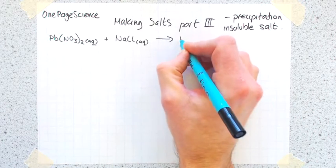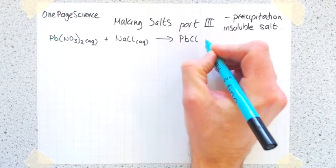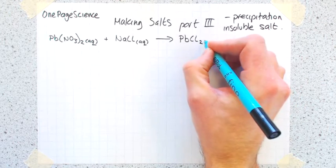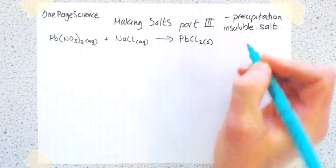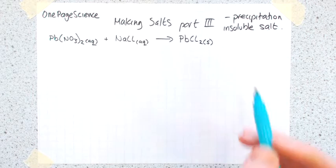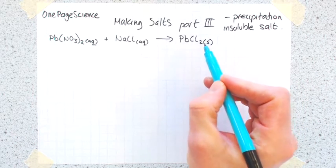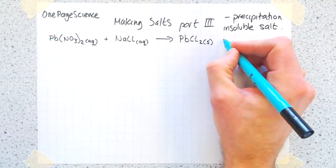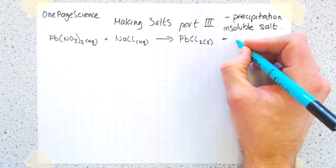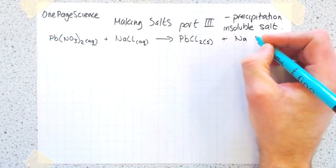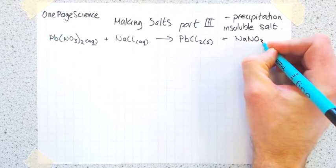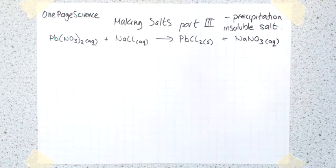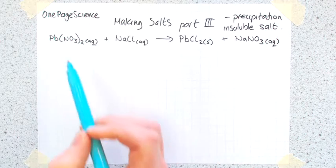You make lead chloride, and the state symbol there would be (s), which tells you this is not soluble in water - you've formed a solid. You also make another byproduct which we're not as interested in, sodium nitrate (aq), which is soluble in solution.